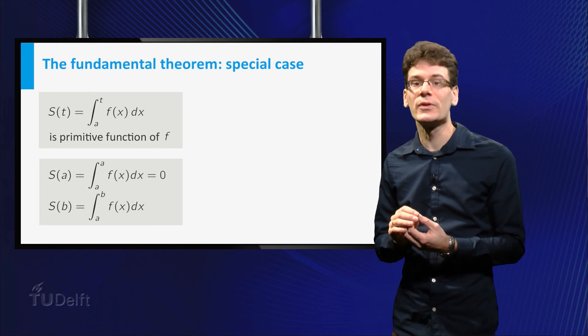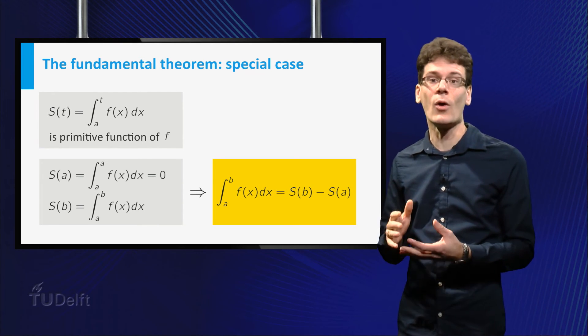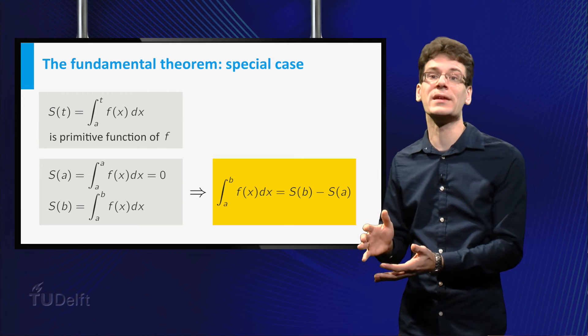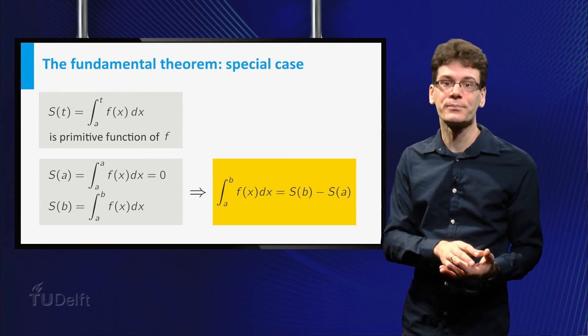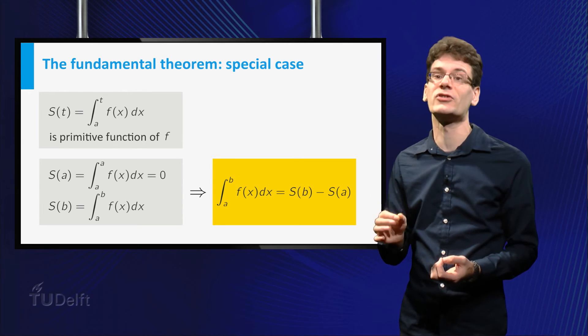Since s of a is zero, we can simply subtract and get that the integral from a to b of f equals s of b minus s of a. This is precisely the fundamental theorem for the particular primitive function s.